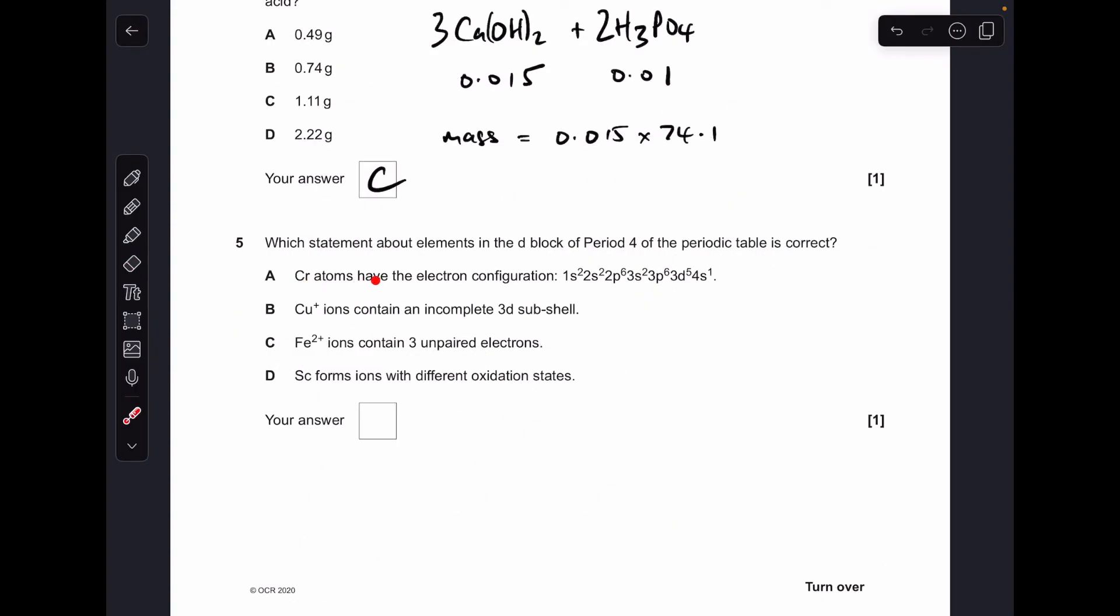Moving on to question five. So statement A, is that correct? Chromium atoms have electron configuration of that. Remember, chromium is one of the weird ones, doesn't follow the usual pattern in the electron configuration. So that is actually correct, so that was quite nice of the exam board to make the first option the right answer.